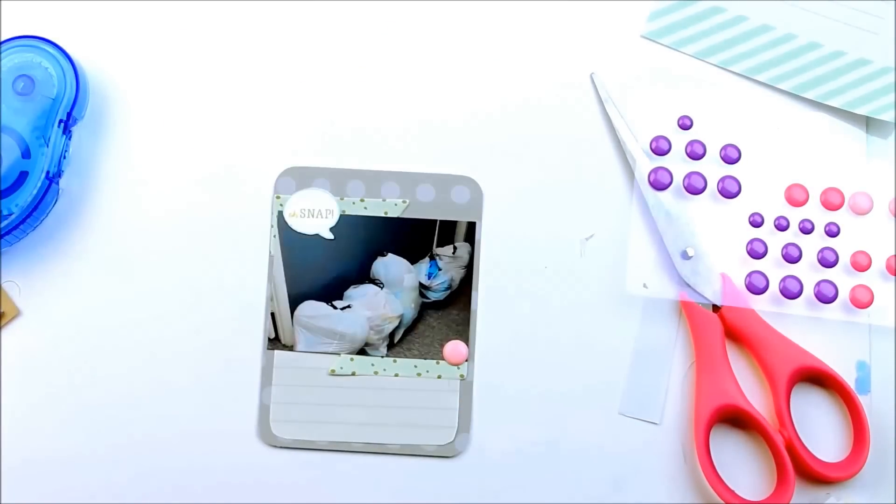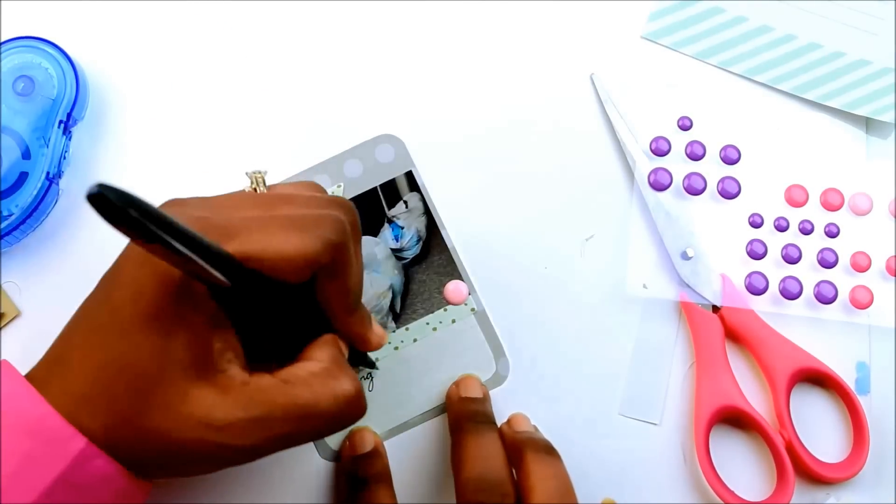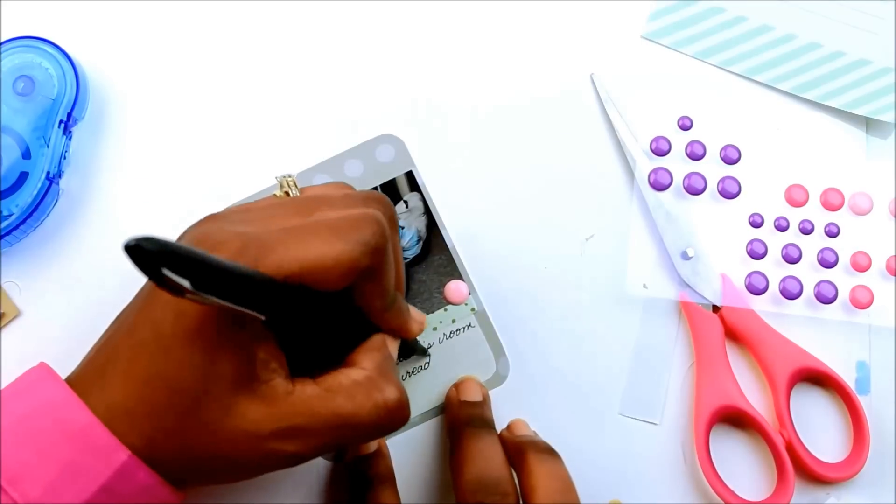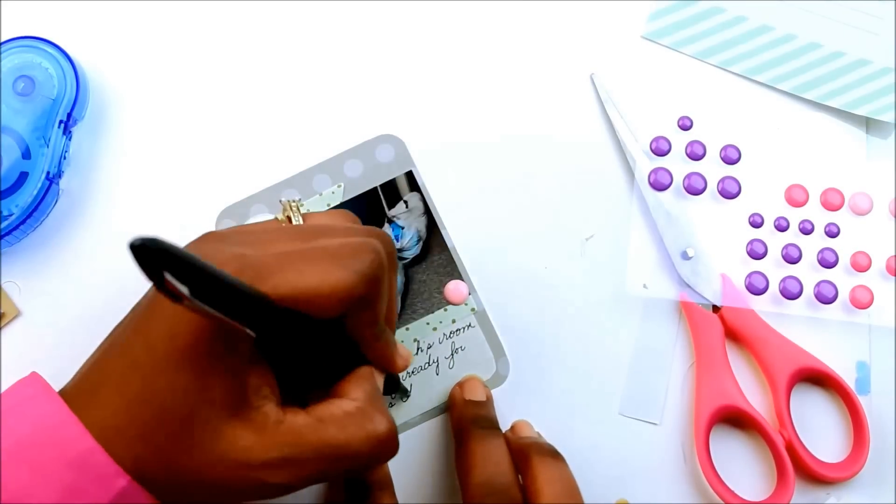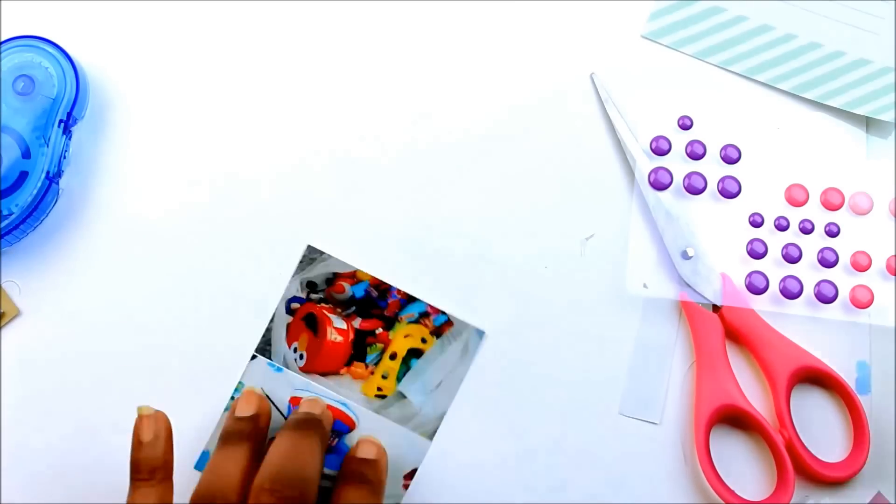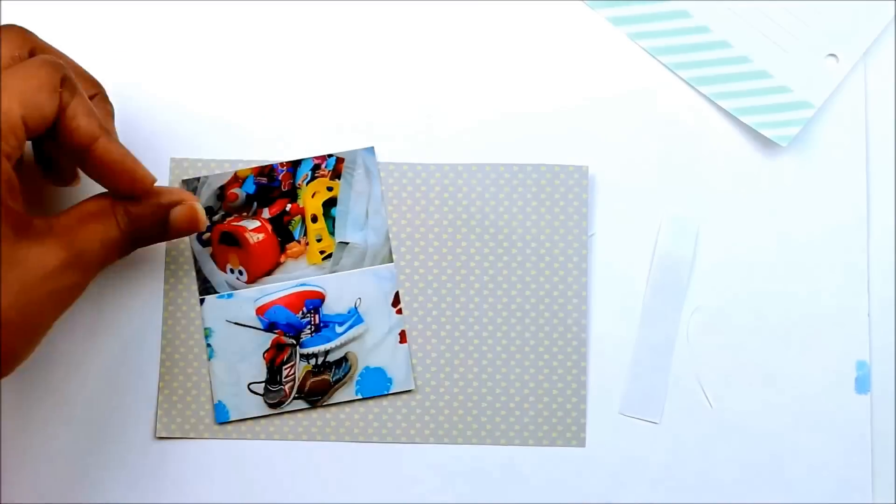I'm just adding that enamel dot for a pop of color because everything was kind of gray, everything was kind of blending in. For my journaling, I'm just writing cleaning Isaiah's room and getting ready for Christmas toys. That little conversation bubble said oh snap. I just thought that was nice to go with all the trash bags.